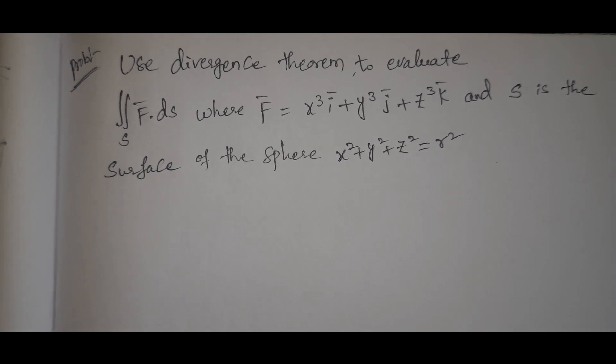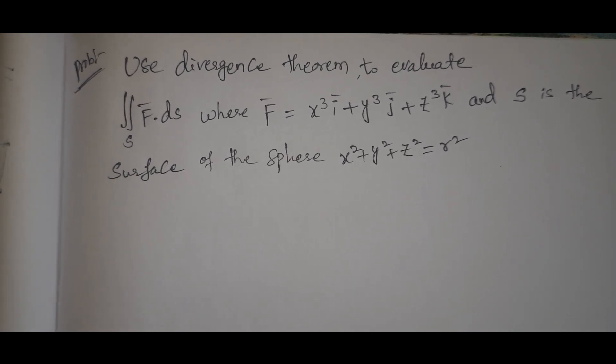Hi viewers, welcome to Roger Shakaloo. Today our topic is a Gauss divergence theorem problem, very important. Use divergence theorem to evaluate integral S F dot dS where F equals x cubed i bar plus y cubed j bar plus z cubed k bar and S is the surface of the sphere x squared plus y squared plus z squared equals r squared.